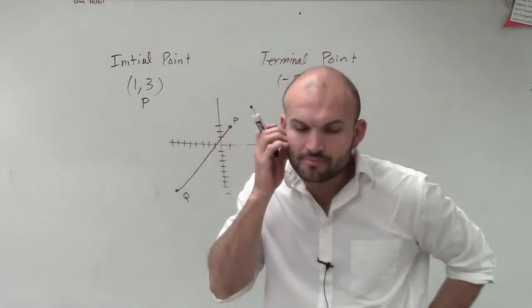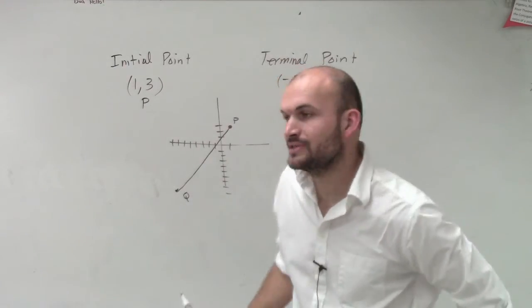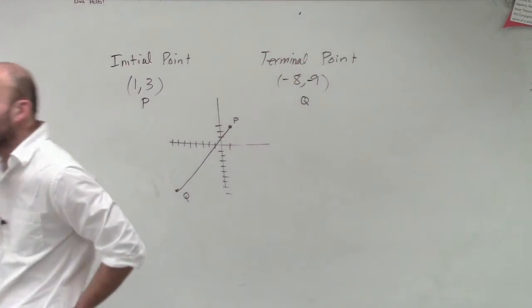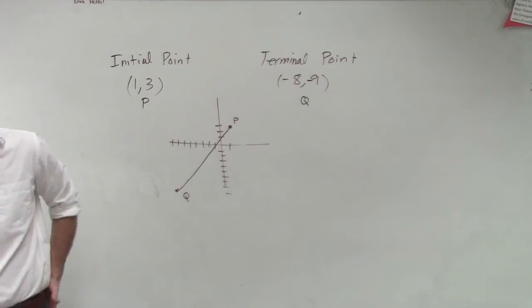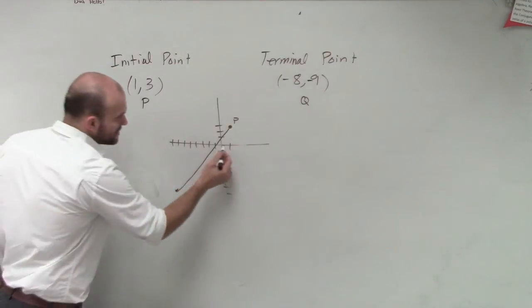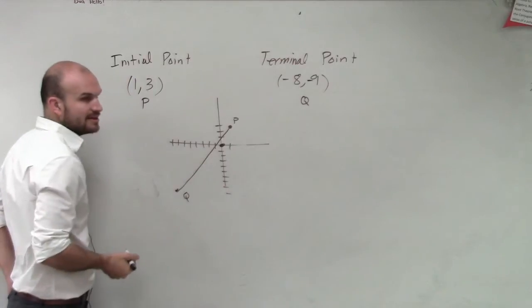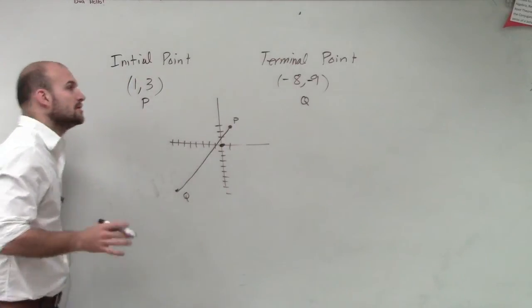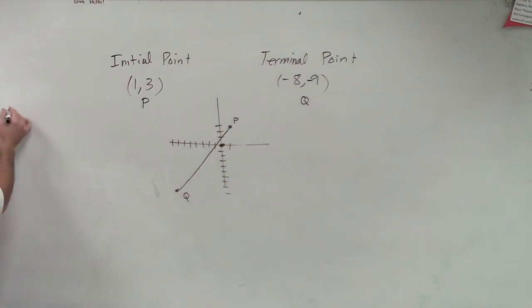Now remember, we need to find our component vector. So when we're talking about component vectors, remember component vectors is a vector that's going to have the same direction and magnitude. However, the component vector, your P, is going to be at 0, 0. So remember, to find the component vector, what we'll do is component vector V or Q. So to find this component vector...